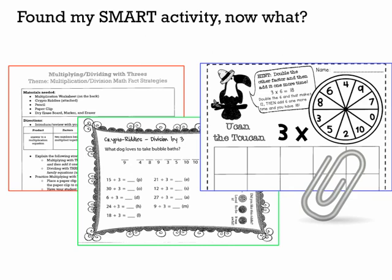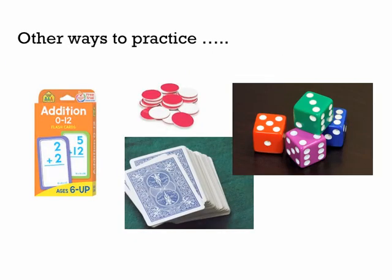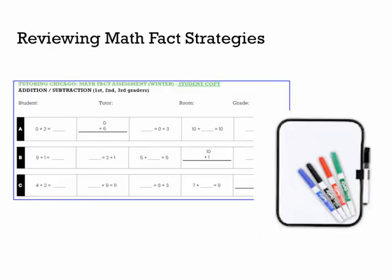Once you have taught the math fact strategy, then you and your student should practice — a lot. At Tutoring Chicago, we have lots of different materials to practice math facts with. All of the materials listed on this page foster hands-on learning. Hands-on learning is an effective teaching tool that aids with mastery. Another material we recommend using are whiteboards. Kids love working with whiteboards. When practicing with whiteboards, it is important to highlight different types of equations as seen in the math fact assessment. Discuss with your student that unlike reading, math does not always work from left to right. It is important to set aside time in every tutoring session to work on math facts.